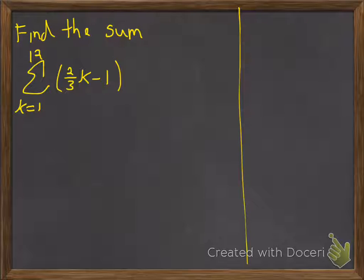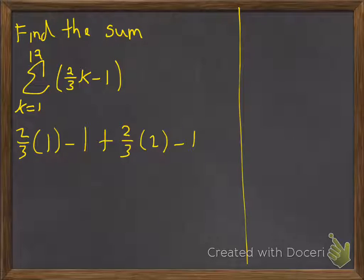Now, the brute force way to do this would be to evaluate it at 1, and then evaluate it at 2, and then etc., and evaluate it at 12, which is where we're going to stop. But that's kind of tedious, and it'd be even worse if this was 120.